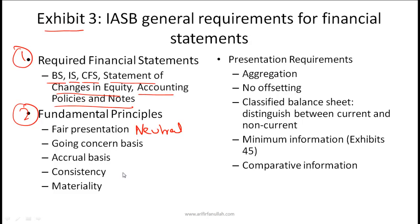Consistency means that if we look at financial reports from period to period there needs to be consistency in the way we present data. For example, if in a given year we are presenting inventory using the LIFO method, we need to be consistent — we can't keep switching between LIFO and FIFO depending on what suits us. For materiality, omissions or misstatements of items are material if they could individually or collectively influence the economic decisions of users taken on the basis of the financial statements. Any material item shall be presented separately.